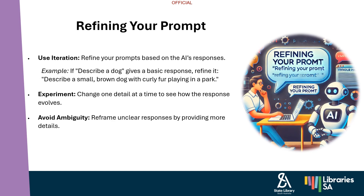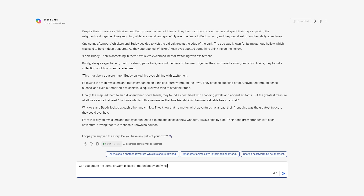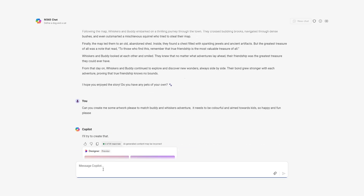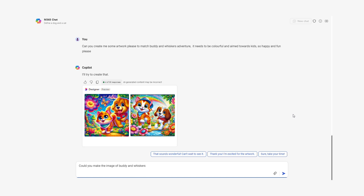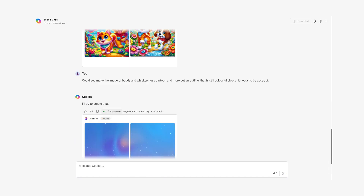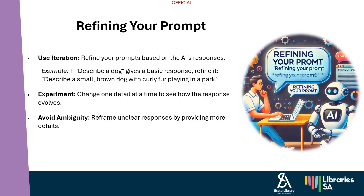Initial prompt example: 'What are digital skills?' The refined prompt would be: 'List and explain five essential digital skills needed for remote work, including examples of how each skill can be applied.' Another example — initial prompt: 'Write a story.' Refined prompt: 'Write a short story about a cat that discovers a hidden world, using a maximum of 300 words and incorporating the themes of friendship and adventure.' You can try these yourself using Copilot or ChatGPT.